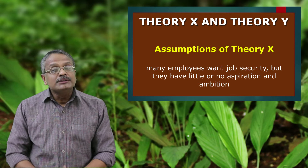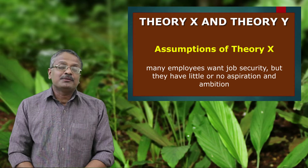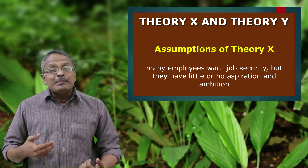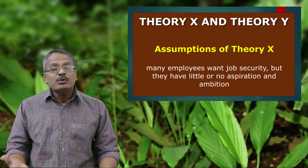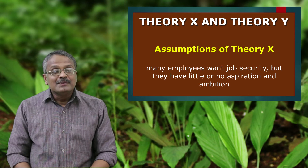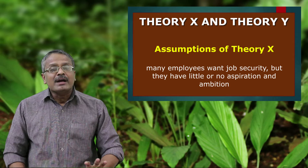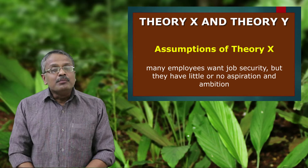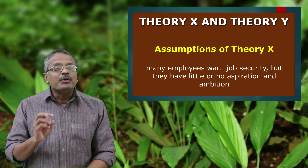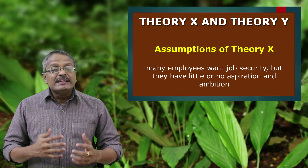The fourth assumption: many employees want job security but have little or no aspiration and ambition. The manager thinks most employees have an undeserved desire for job security — they don't want to work for the organization but want to enjoy all benefits. The manager has an opinion that employees have no right to get promotion and don't deserve job security because most of them have no aspiration or ambition. Because of this feeling, the manager gets irritated and becomes stricter towards them.